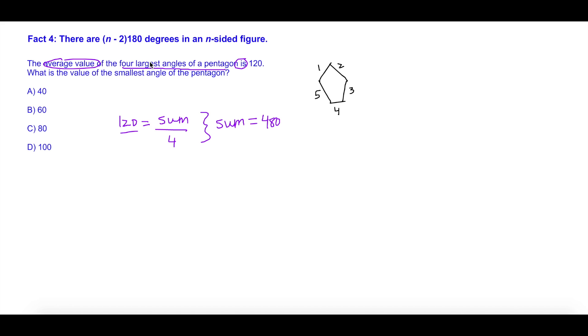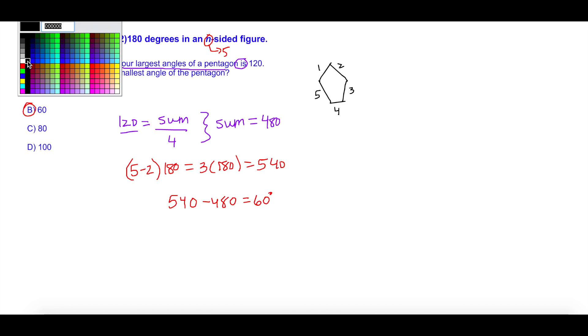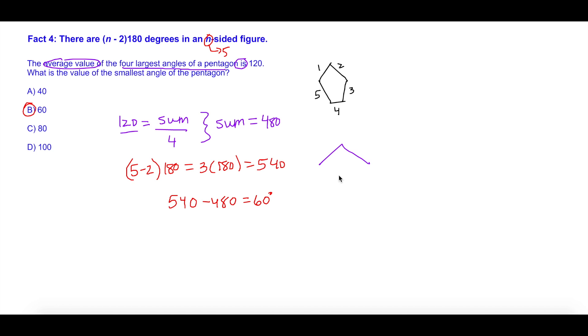The second step is to invoke the glorious fact four. There are (n-2) times 180 degrees in an n-sided figure. So n in this case is 5. 5 minus 2 times 180 equals 3 times 180, which equals 540. So if we're trying to find the smallest angle on the pentagon, we just subtract 540 minus 480, and we get 60 degrees. A little side note - if you, on test day, completely forget this formula, you can always divvy up the pentagon into shapes that are familiar to you. For instance, you could see there are three triangles here. So 3 times 180 equals 540.